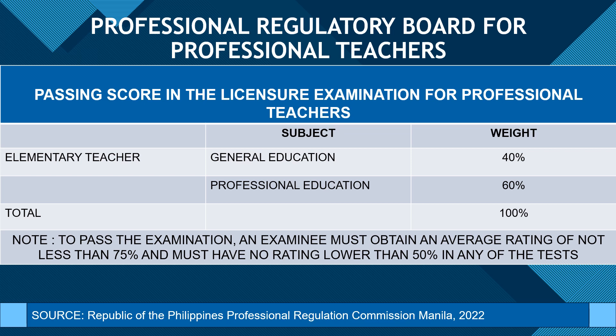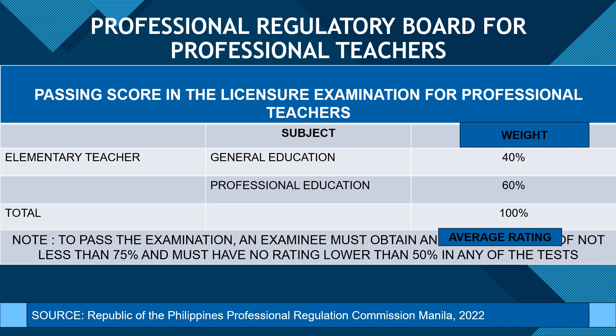Let us reflect upon the significance of three key factors: the weight assigned to each subject, the required average rating, and the minimum rating that you need to reach in each subject area. We will delve into each of these factors and provide illustrative examples to show the process of achieving the passing score.